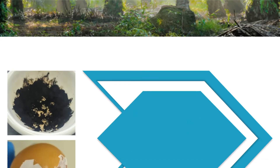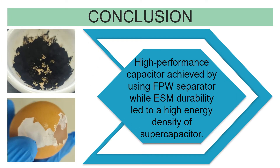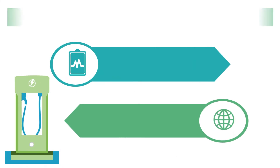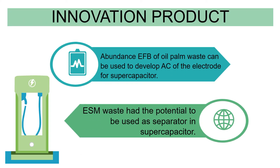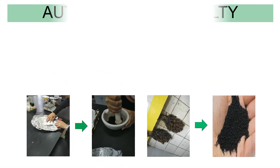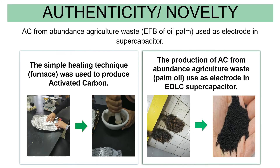Conclusion: High performance capacitance was achieved using the FPW separator, while ESM durability led to a high energy density. For the innovation product, the abundance of EFB from oil palm waste can be used to develop activated carbon for supercapacitor electrodes, and ESM waste has the potential to be used as a separator.